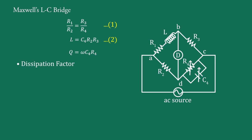Then, dissipation factor Df: it is defined as Df equals R1 upon ωL, which is equal to 1 upon Q. By putting the values of R1 and L from the balance equations, or taking the reciprocal of Q, we get dissipation factor equal to 1 upon (ω·C4·R4).